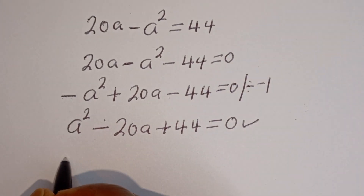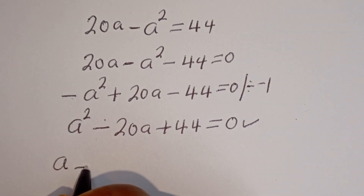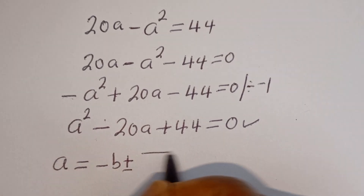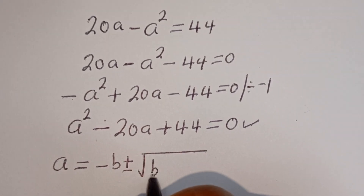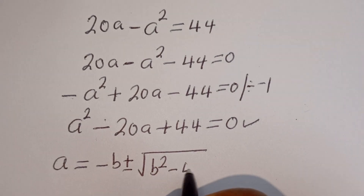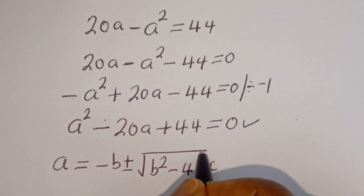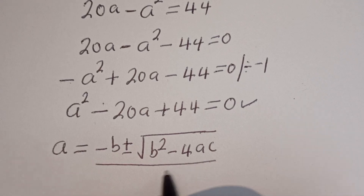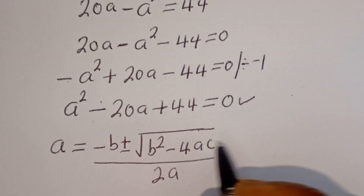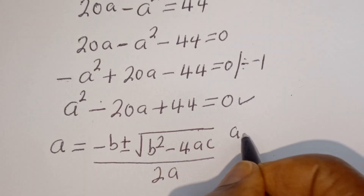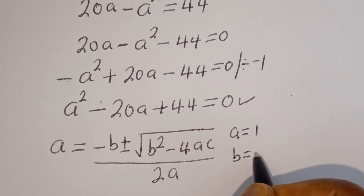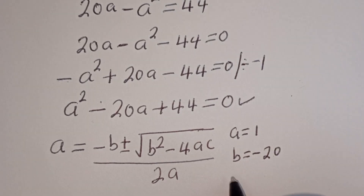The quadratic general formula is given as x is equal to minus b, plus or minus the square root of b squared minus 4ac, divided by 2a. From our equation, a is equal to 1, b is equal to minus 20, and c is equal to 44.